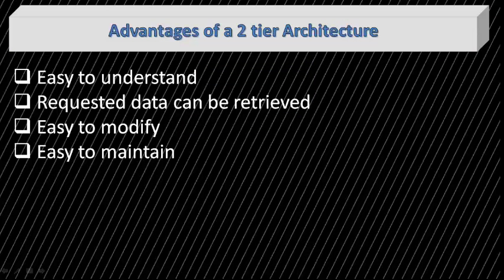The advantages of two-tier architecture are: it is easy to understand as it directly communicates with the database, and requested data can be retrieved easily and quickly when there is a small number of users. It is easy to modify because any required changes can be sent directly to the database. It is also easy to maintain — when there are multiple requests, they are handled in a queue without any mismatch.